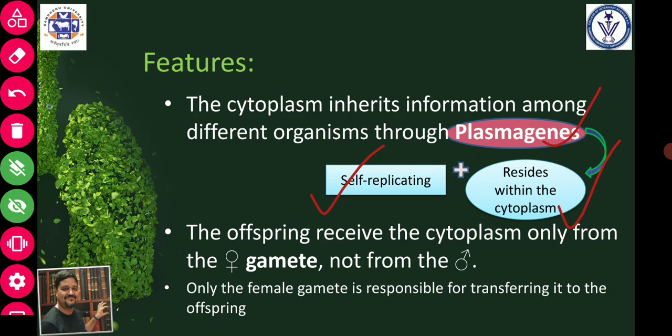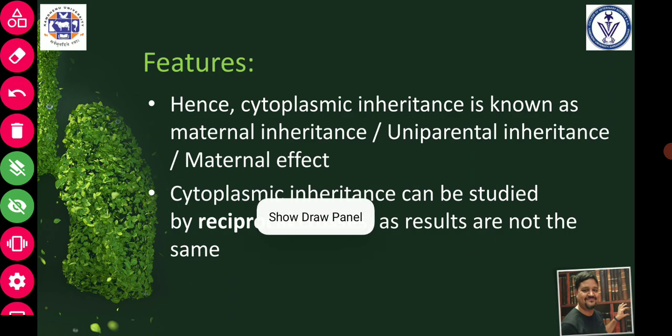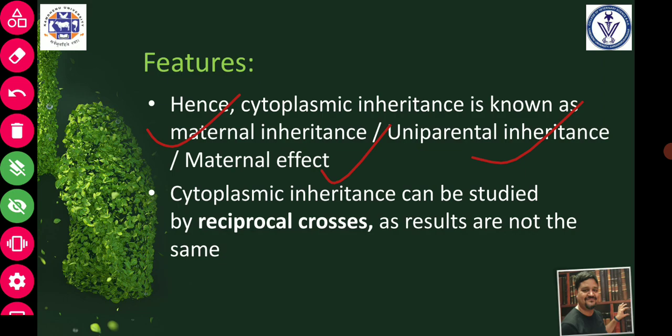The offspring receive cytoplasm only from the female gamete, not from the male gamete. We have already discussed gametogenesis — oogenesis and spermatogenesis — where only the female gamete contributes cytoplasm. That is the reason behind cytoplasmic inheritance: only the female will contribute cytoplasm, with no contribution from the male. Based on this property, cytoplasmic inheritance is also known as maternal inheritance, uniparental inheritance, or maternal effect, because only one sex — the female — is contributing.